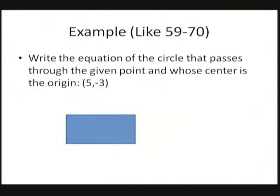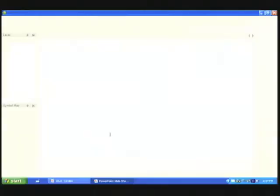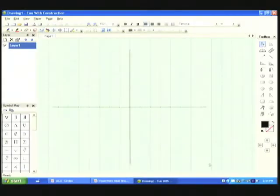Now let's take a look at one more. I've got the circle going through five, negative three, and its center is at the origin, zero, zero. So let's take a look at that on a coordinate plane. We'll go ahead and put a coordinate plane down.